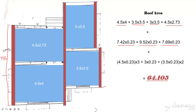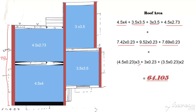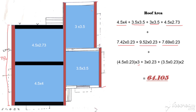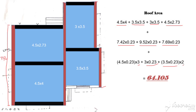Then horizontally there are some short walls. First I write 4.5 into 0.23 — this is 3 walls. Then 3 into 0.23. Then 3.5 into 0.23 — this gives 2 walls.